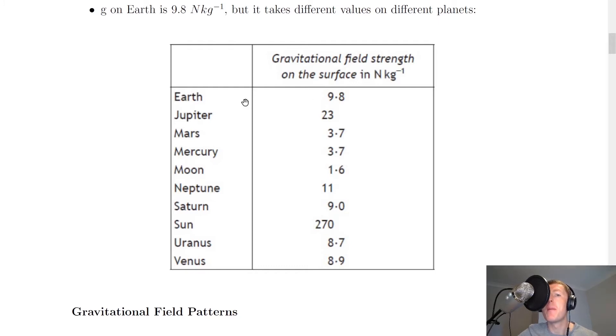By a general rule of thumb, the more massive the planet, the larger the gravitational field strength on that planet's surface. So Jupiter, for example, has a g value of 23 newtons per kilogram, whereas Mars and Mercury have a g value of 3.7 newtons per kilogram. The main ones that I would try and remember are 9.8 for Earth, 3.7 for Mars, and 1.6 for the Moon, as these tend to be asked about quite a lot.